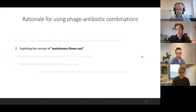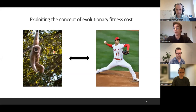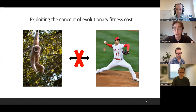Secondly, we also want to exploit the concept of evolutionary fitness costs. To explain this clearly, think of monkeys and humans: monkeys have evolved much longer muscles, making it possible for them to hang in trees for four to five hours, while we as humans have evolved shorter, more precise muscles, making it possible to throw a very precise pitch. But it doesn't work the other way — we are not able to hang four or five hours in trees.